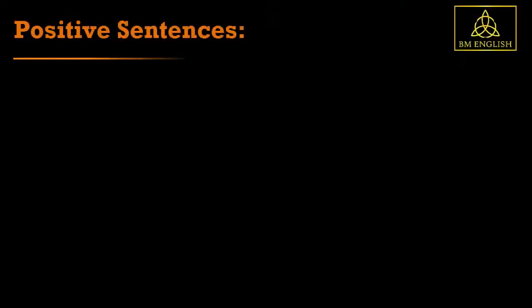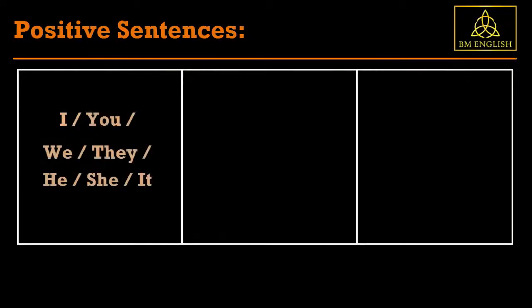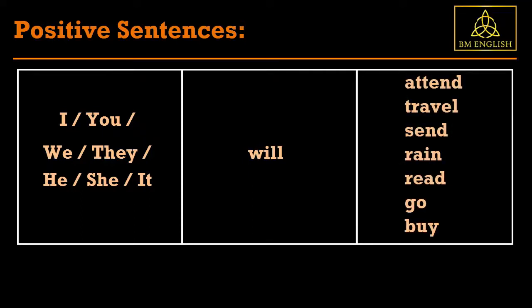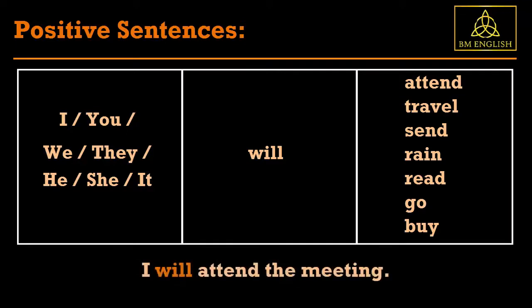Let's see how to form a future simple sentence. For positive sentences: I, you, we, they, he, she, it — will — attend, travel, send, rain, read, go, buy.